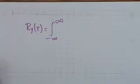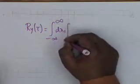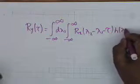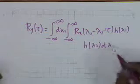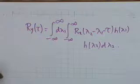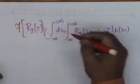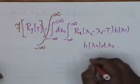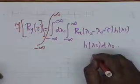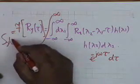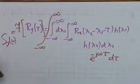R_Y(τ) equals the double integral: ∫∫ R_X(λ₂ − λ₁ − τ) H(λ₁) H(λ₂) dλ₁ dλ₂. If I take the Fourier transform of this — that is, multiply by e^(−jωτ) and integrate over τ — this equals S_Y(ω). To evaluate this, we first integrate with respect to τ, pulling H(λ₁) and H(λ₂) outside since they do not involve τ.